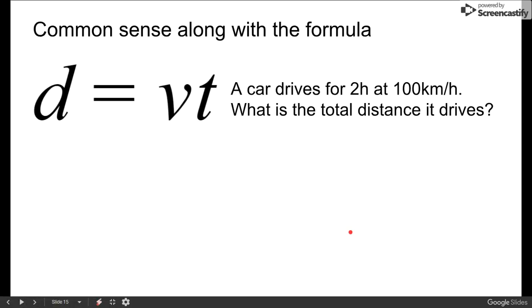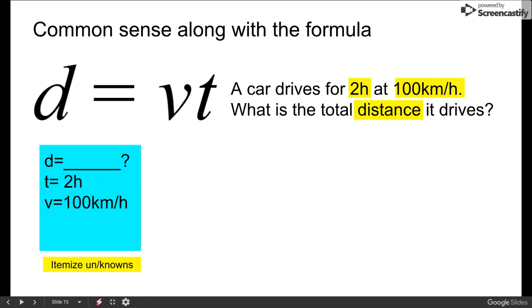Now we can also use common sense along with this formula. Look at this question: a car drives for two hours at 100 kilometers an hour. What is the total distance it drives? Distance, there's our time, there's our speed, and we've been asked to find distance. We itemize our knowns and unknowns.